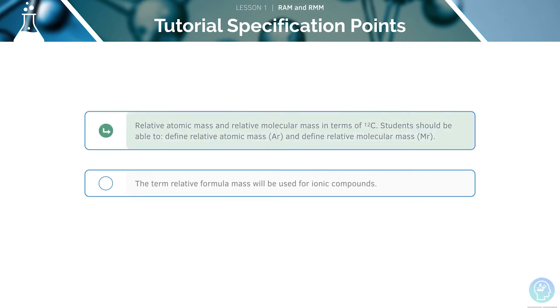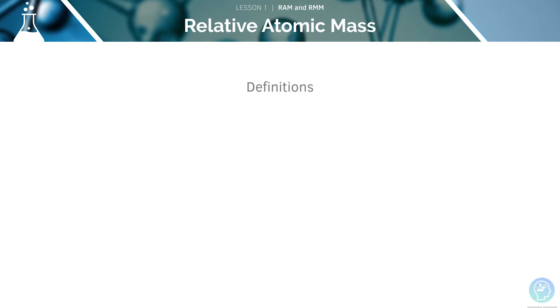Let's look at the first specification point in a little more detail. We'll be discussing the terms relative atomic mass and relative molecular mass in terms of carbon-12. Here are the four definitions for this section. We'll look at AR, MR, RIM and RFM.